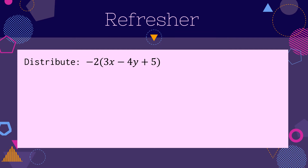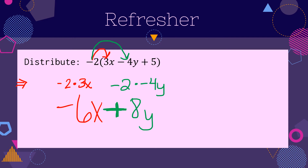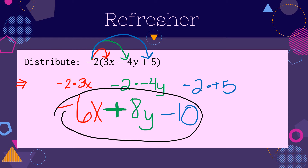Let's review distribution quickly — this is a refresher. If you need more of a refresher, see my previous videos. When I distribute, the first thing I want to see is those arrows, and I'm going to color coordinate these. I'm going to show that I'm taking negative 2 times 3x, which gets me to negative 6x. For the second distribution, that's negative 2 times negative 4y, so that becomes positive 8y — you need that plus sign. This is an expression, so everything needs a plus or minus in the middle. And we have a third term: negative 2 times positive 5 gives negative 10. So this is what my final expression needs to look like.